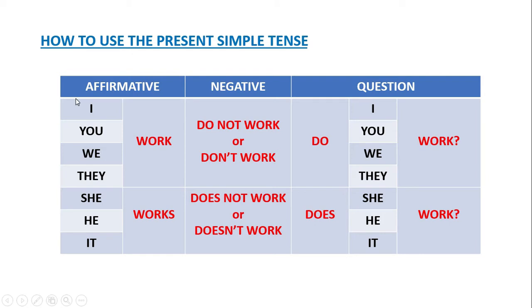In the negative way, we can say: I do not work, or I don't work. You do not work, or you don't work. We do not work, or we don't work. They do not work, or they don't work. She does not work. He does not work. It does not work. Or you can say: she doesn't work, he doesn't work, it doesn't work.